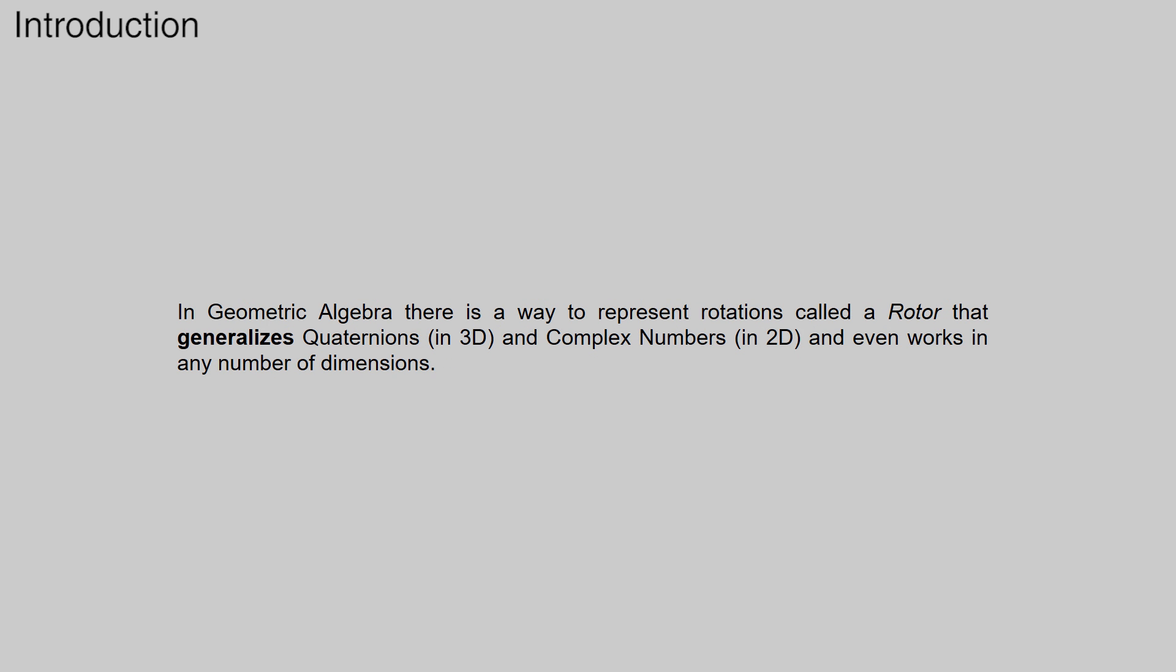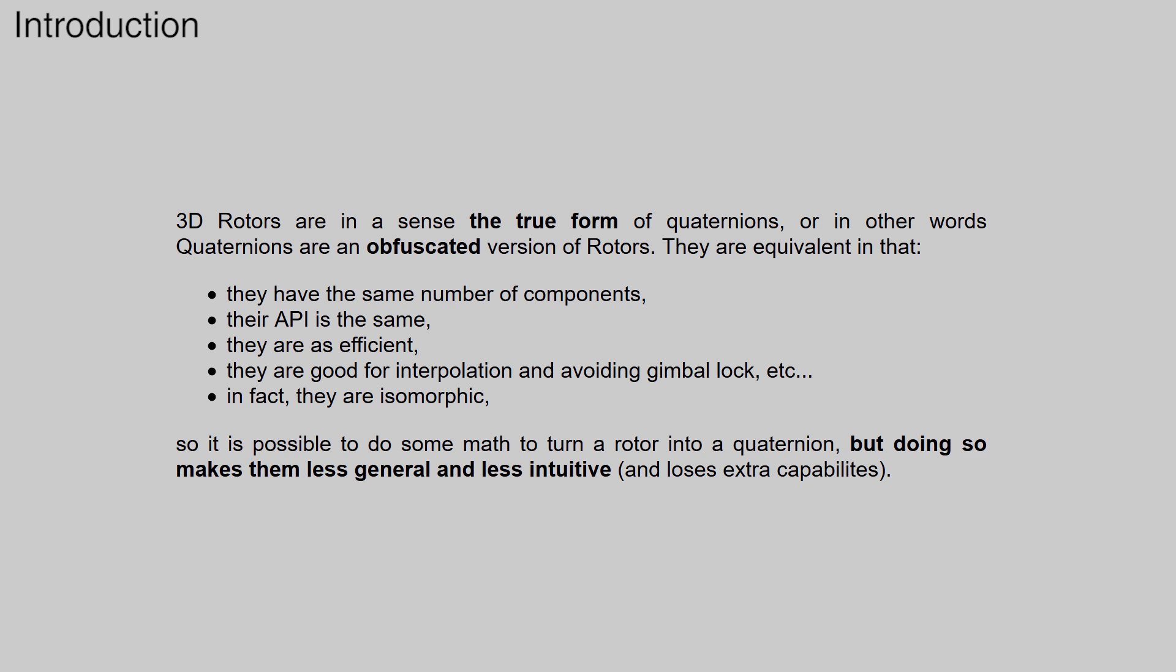In geometric algebra, there is a way to represent rotations called a rotor that generalizes quaternions in 3D and complex numbers in 2D, and even works in any number of dimensions. 3D rotors are in a sense the true form of quaternions, or in other words, quaternions are an obfuscated version of rotors.